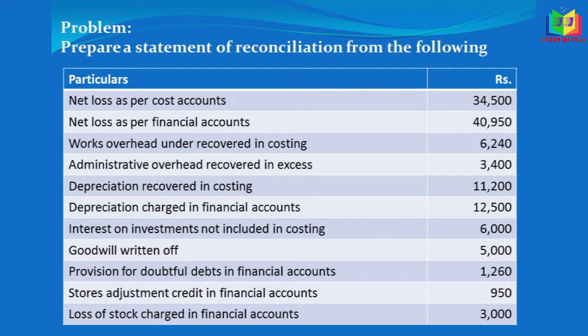The net loss as per cost account and net loss as per financial account are both given. We'll see how to treat this net loss in the problem. Works overhead under-recovered in costing, administrative overhead recovered in excess, depreciation recovered in costing and depreciation charged in financial account — both depreciation figures are given and we have to compare them to see whether to add or subtract the difference.